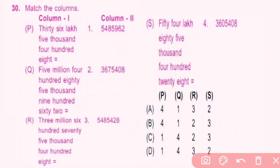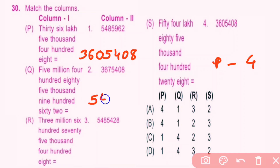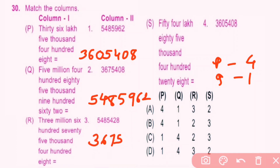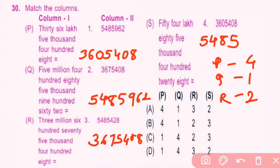Question number 30. Match the column. For P: 36,05,408 — the correct match is 4. For Q: 54,85,962 — the correct match is 1. For R: 36,75,408 — the correct match is 2. For S: 54,85,428 — the correct match is 3. So option B is the correct answer.